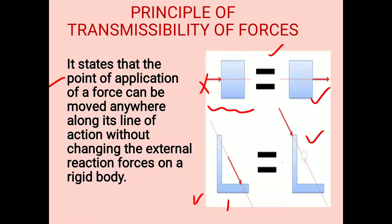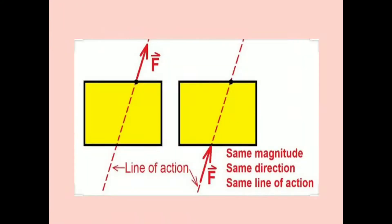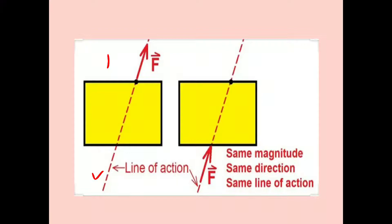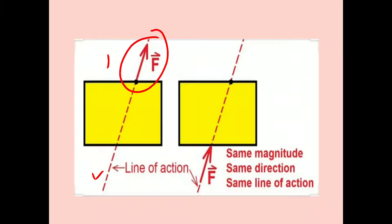In this example, there are two blocks shown. Force F is acting and this dotted line shows the line of action of this force. According to this principle, we can move this force to any point along the line of action, and the net external effect on the body remains the same.